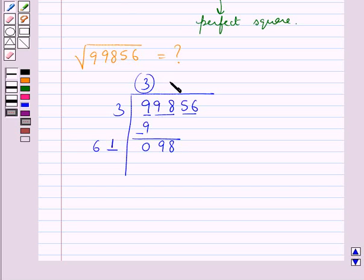We put 1 in this blank. Since 61, 1 times is 61. Subtract 61 from 98. We get 37. Take down this pair 56 along with 37.